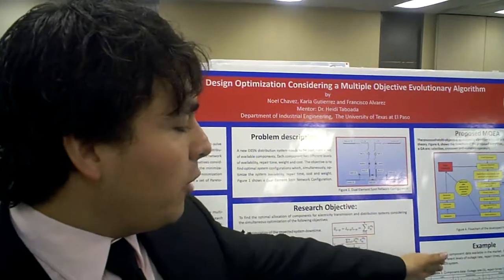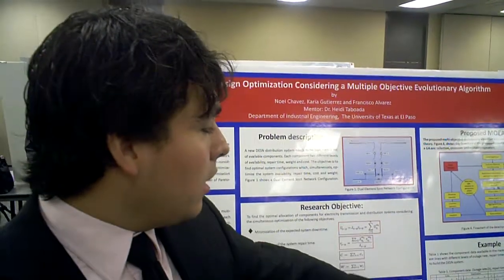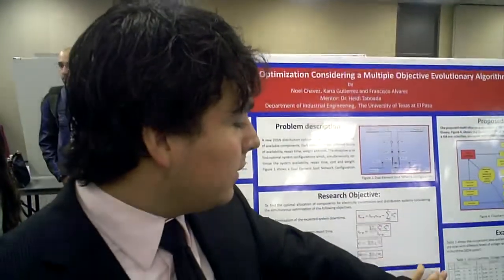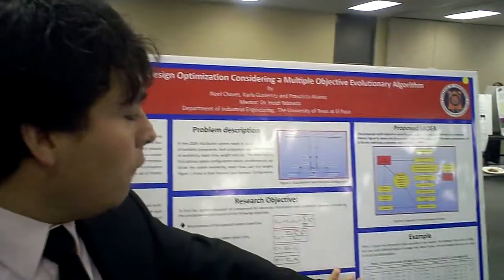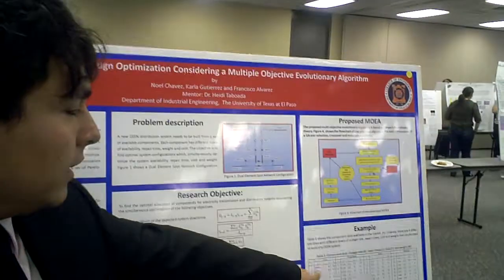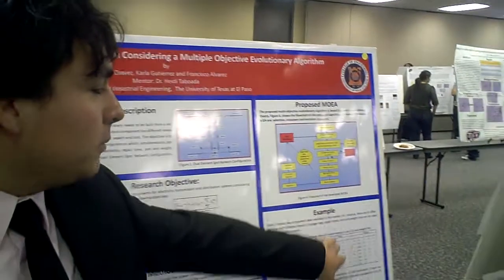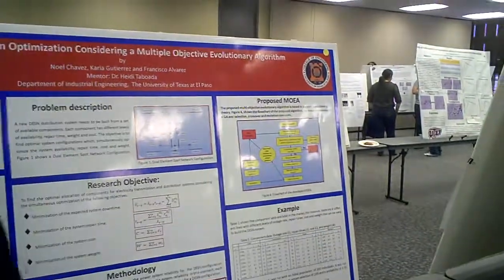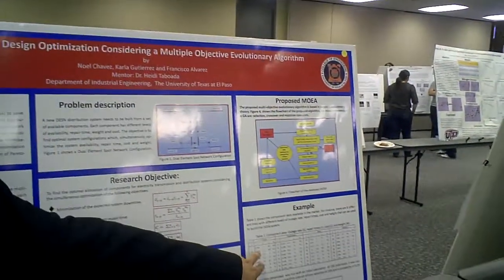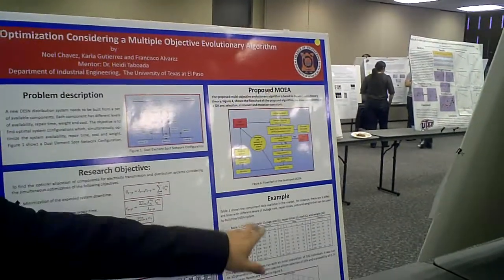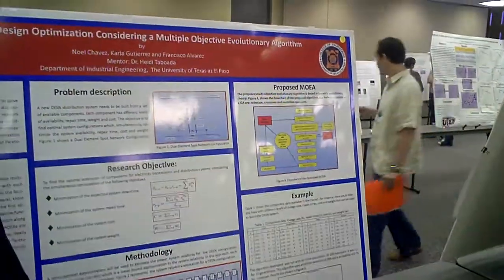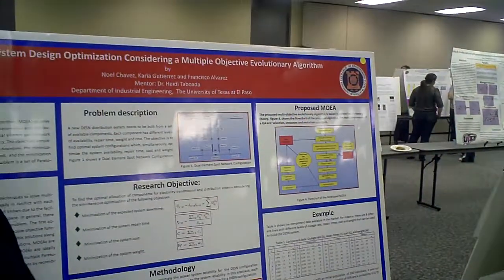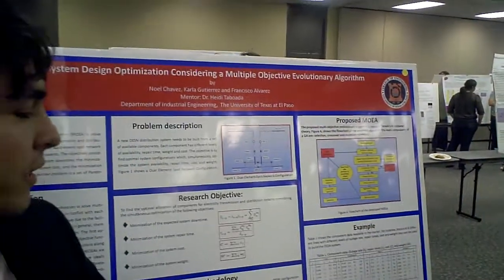Here we have an example using eight different components: the lines, the transformers, the buses, and the breakers. We have all the values for the cost, the weight, the downtime, and the repair cost.